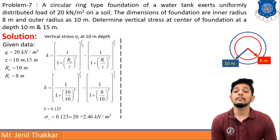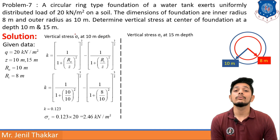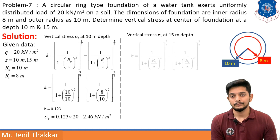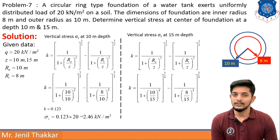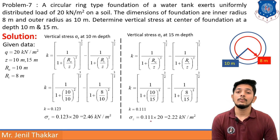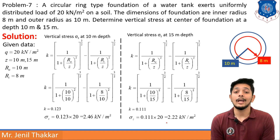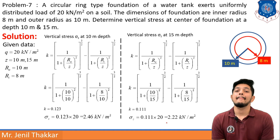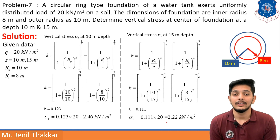Now for depth of 15 meters, the formula remains the same. Putting z = 15, nothing else will change, and K = 0.111. So σz = 0.111 × 20 = 2.22 kN/m². We can see that at 10 meter depth vertical stresses are more, but at 15 meter depth vertical stresses are less. This clearly shows that as depth increases, stresses decrease — like a pressure bulb.